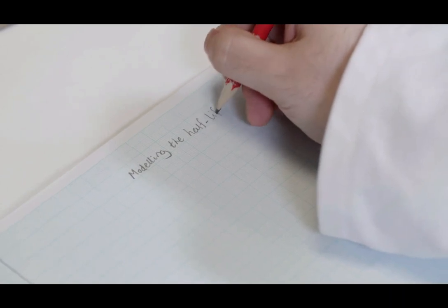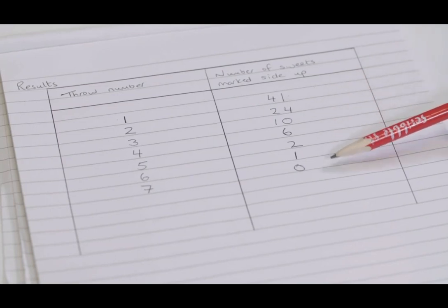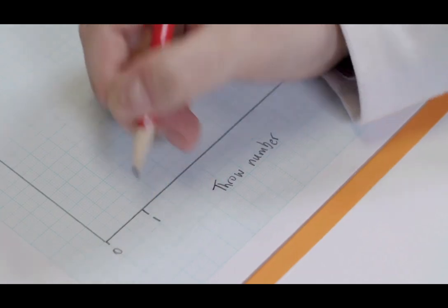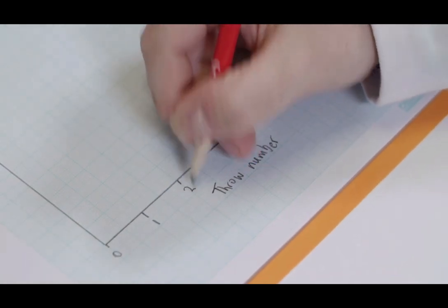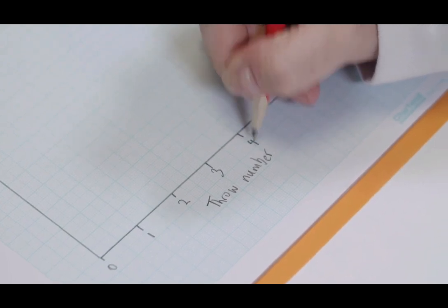The graph is given a title. In this experiment, the sweets were thrown seven times, so the x-axis of the graph needs to accommodate this. On the graph paper, the points showing the number of throws are equally spaced along the x-axis.